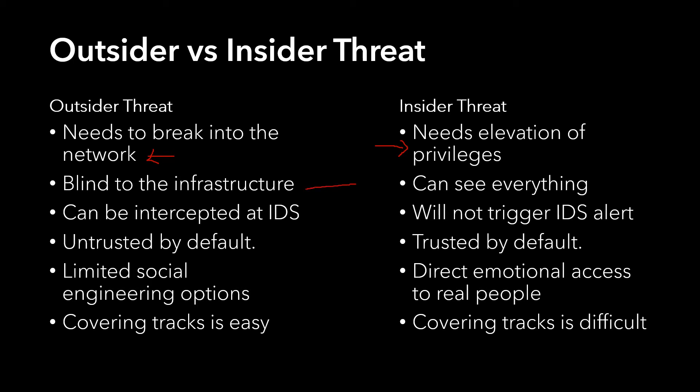The outsider threat is blind to the infrastructure — they cannot see what is inside. That is why they have to make assumptions through a creative process: doing ping scanning and trying to identify what the infrastructure looks like, how many systems there are, what operating systems are running, and so on. As you know, that process is not very accurate, so there are chances you might not get the complete picture.